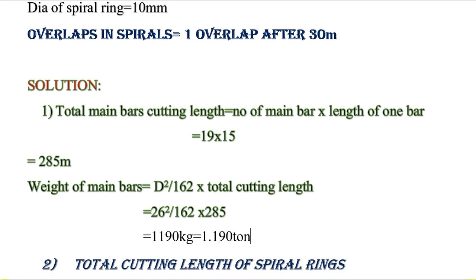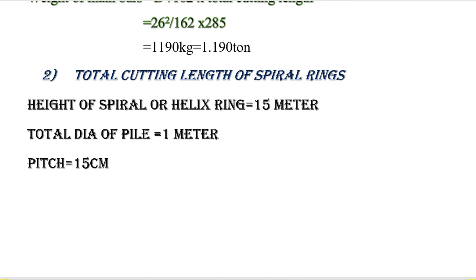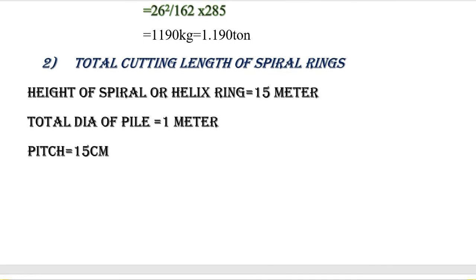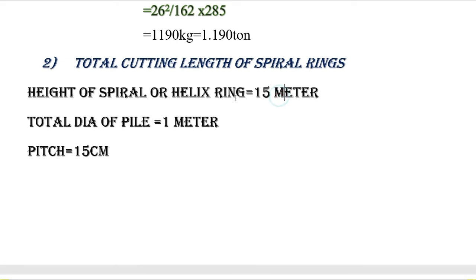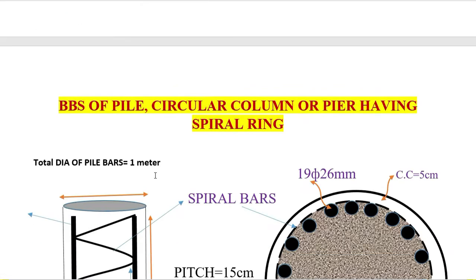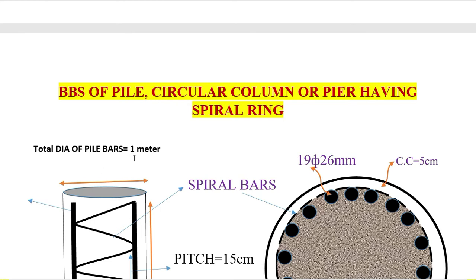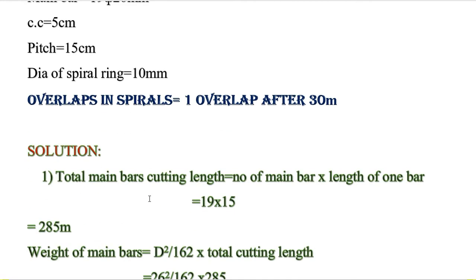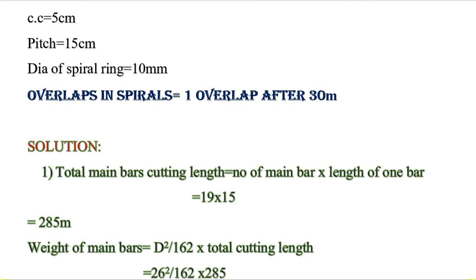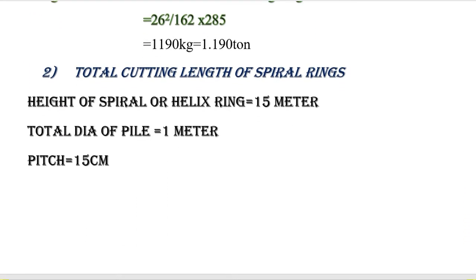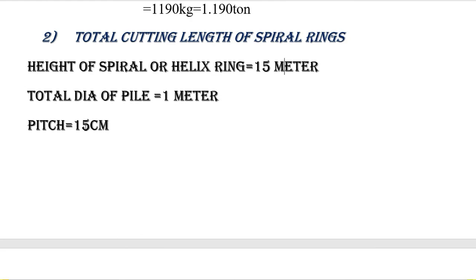Now let's calculate the total cutting length of the spiral ring. The height of the spiral ring will be 15 meter, because the height of the main bar is 15 meter and the spiral ring is provided along the main bars. So the spiral ring height is also 15 meter. The pitch of the spiral ring is 15 centimeter.